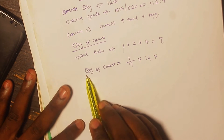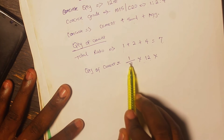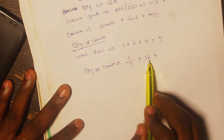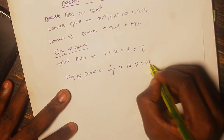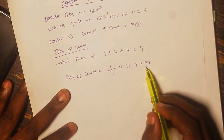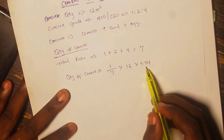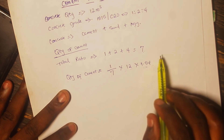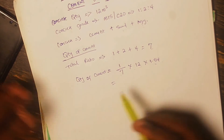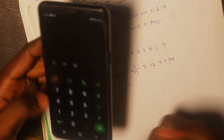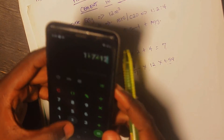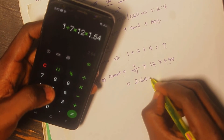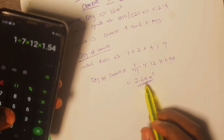That is why, when calculating the quantity of cement, this is the portion of cement over the total portion of the concrete constituents, multiplied by the volume of the concrete which is 12 cubic meters, then multiplied by the adjustment of 1.54. Just know that this 1.54 is a constant — you apply it when calculating for cement, for sand, and for aggregate as well. When we do this calculation: 1 divided by 7, multiplied by 12, multiplied by 1.54, that gives us 2.64 cubic meters. So 2.64 cubic meters is the quantity of cement.